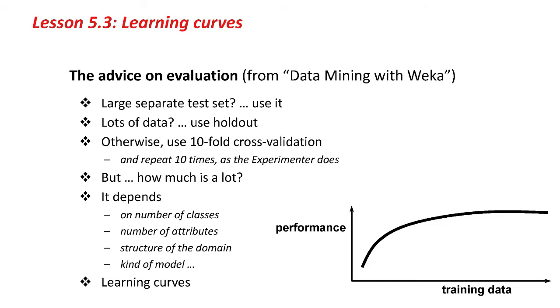It's an impossible question to answer. The only way to look at it, really, is to look at it empirically using learning curves. I've shown a plot here of a learning curve. As the size of the training data increases, the performance gets better and better, but of course it asymptotes off. The point where it starts to asymptote off is probably enough training data to get a reliable estimate.